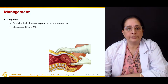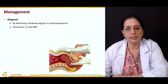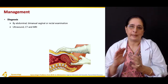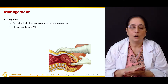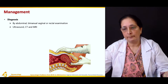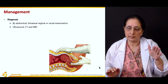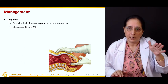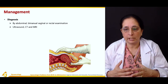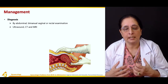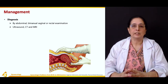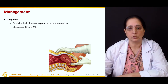Management of vaginal adenosis can be by abdominal, bimanual vaginal, or rectal examination. This diagram shows the bimanual examination — one hand is on the abdomen to push the uterus down, and the other hand is in the vagina to feel for any growth or new tissue formation. Ultrasound, CT scan, and MRI can also be performed.